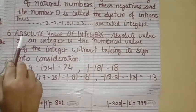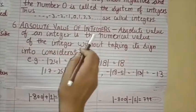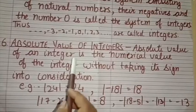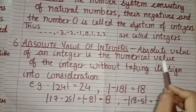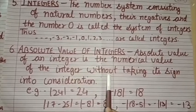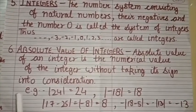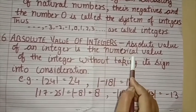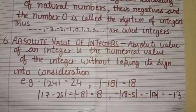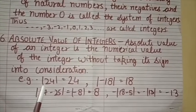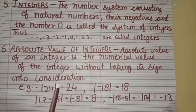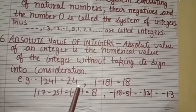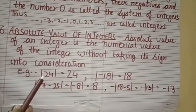Next is absolute value of integers. Absolute value of an integer is the numerical value of the integer without taking its sign into consideration. इसे example से clear करते हैं। For example, |24| — ये two lines absolute value का sign होता है। 24 की absolute value find करनी है तो इसका answer क्या होगा? 24. ये 24 positive है इसलिए 24 ही है।